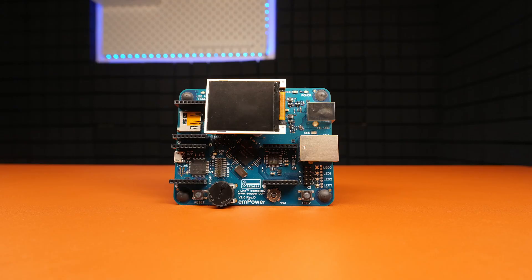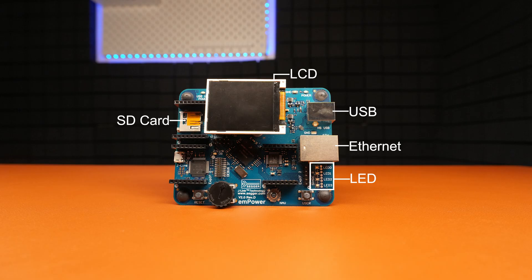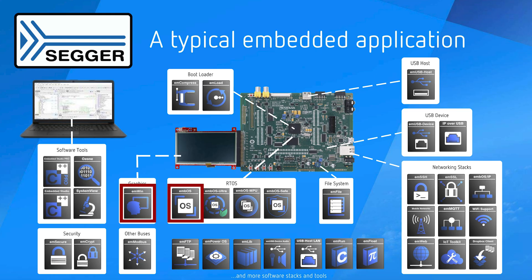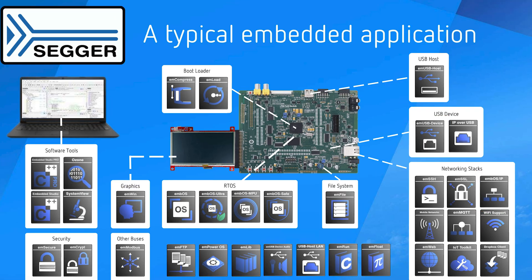Now let's look at the EmpowerOS board, which has an onboard J-Link debugger so you can start your project right away without any external hardware. It includes Ethernet, USB, SD card, LED, LCD, and runs middleware like MWAS, MWIN, MNET, MVUSB, MFile, and many more features. In short, it's a ready-to-use reference platform where you can create, debug, and test your embedded projects quickly.